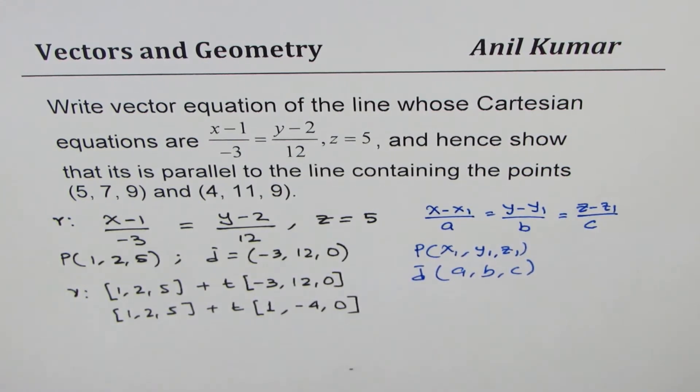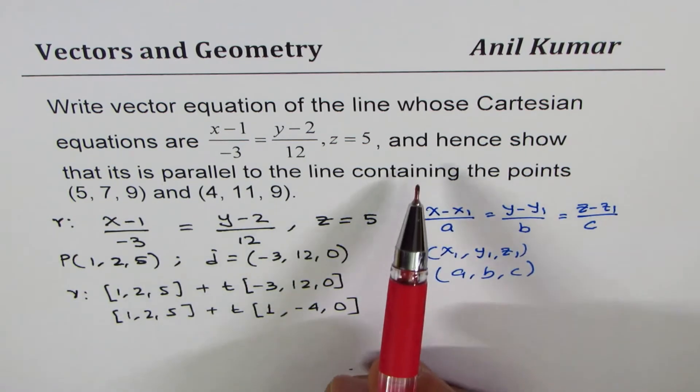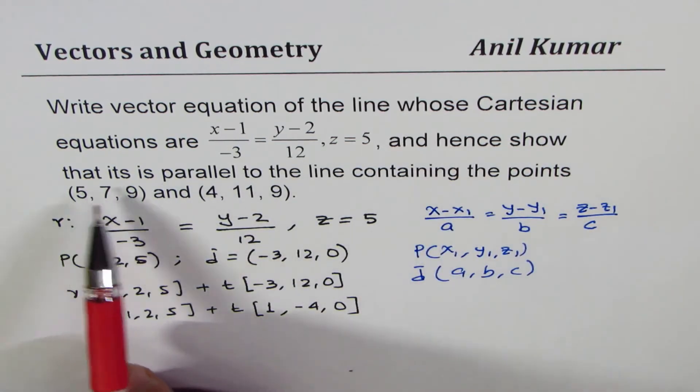So that becomes the vector equation of this line. I hope this part is clear to you. We do have the vector equation of the line. Now, let us do the second part, and hence show that it's parallel to the line containing these two points.